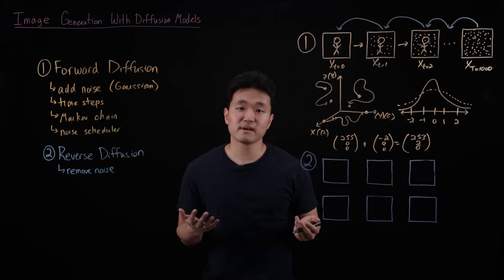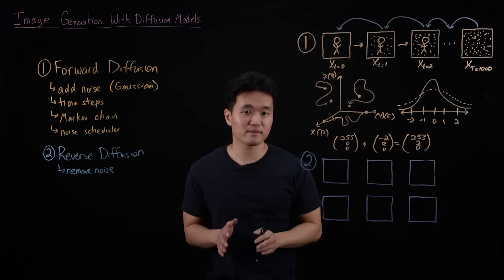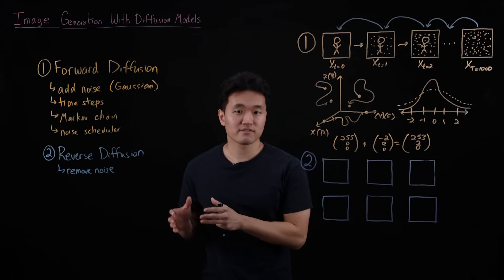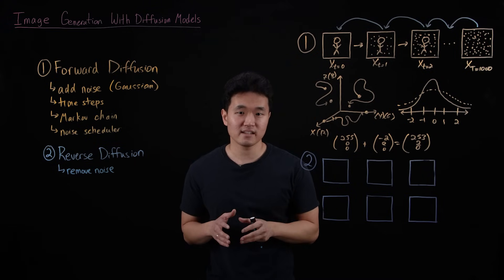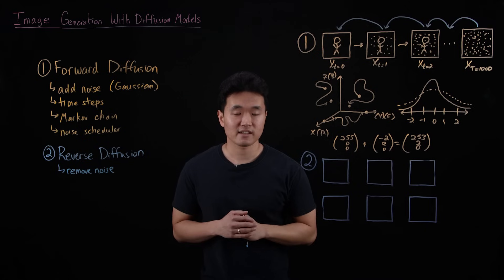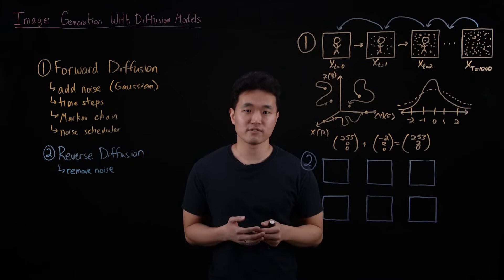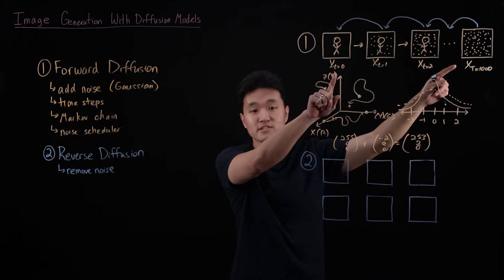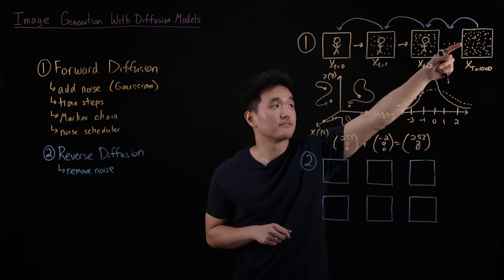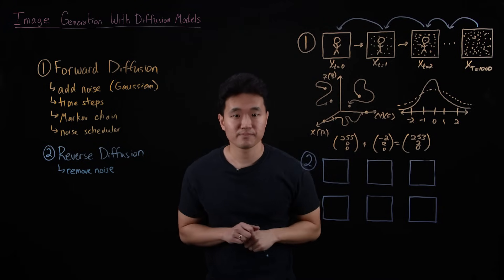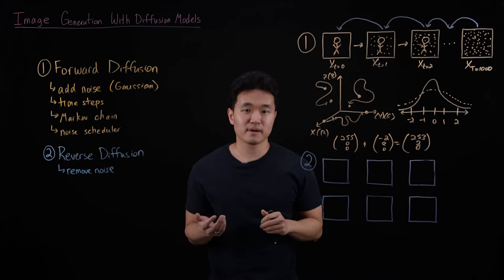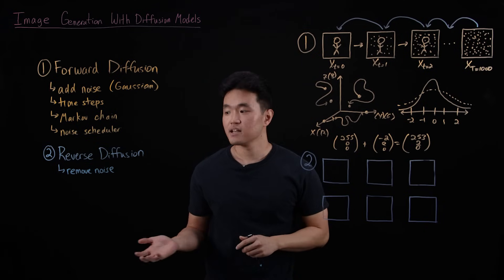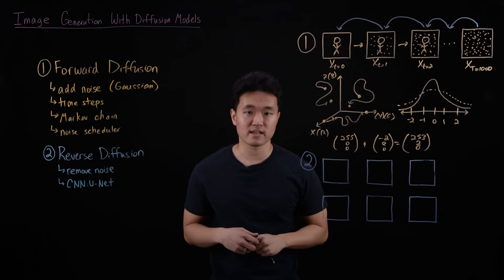So to help me explain this more, there's this quote by the famous sculptor named Michelangelo, who once said, every block of stone has a statue inside it, and it's the job of the sculptor to discover it. In the same way, think of reverse diffusion as, every image of random noise has a clear picture in it, and it's the job of the diffusion model to reveal it. So this can be done by training a type of convolutional neural network called a U-net to learn this reverse diffusion process.